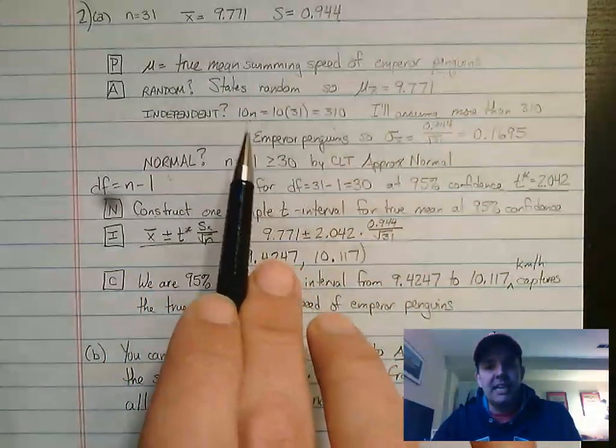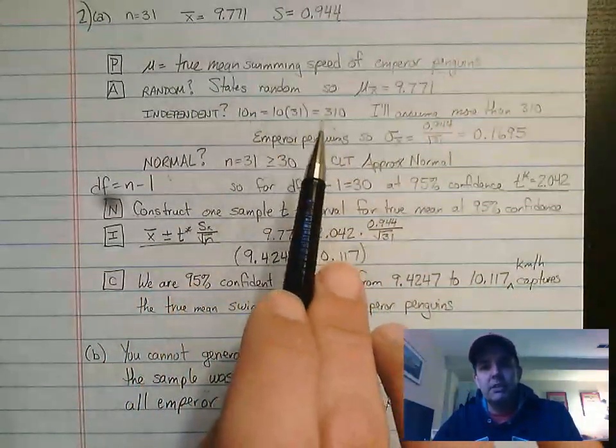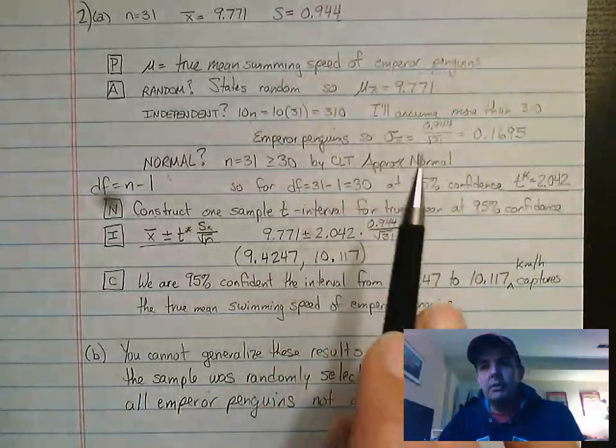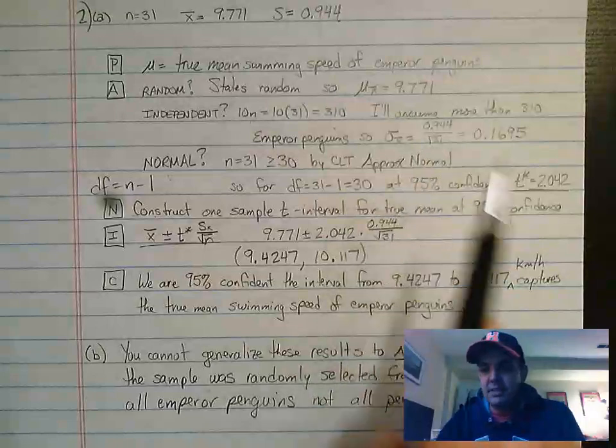Independent, we're going to do 10n again, 10 times 31, 310. Please state, I'll assume more than 310 emperor penguins. So that allows us to figure out the standard error.